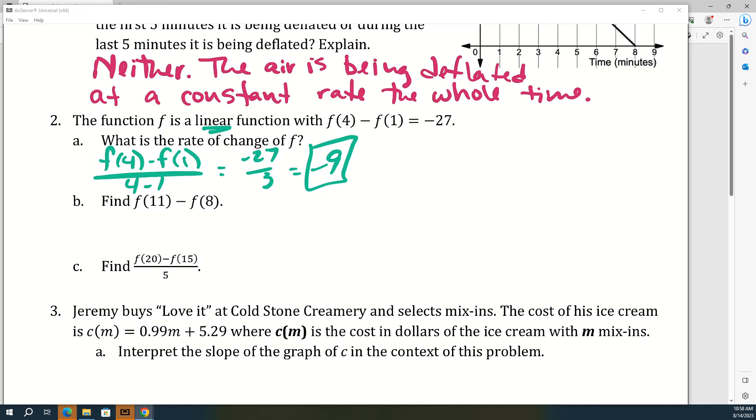Okay, so now for b, I want to find f(11) - f(8). Do we know that without knowing the function? What is it? What's the difference between 4 and 1? What's the difference between 11 and 8? Yeah, so if f(4) - f(1) is negative 27 and this is a linear function, this is also negative 27 because the difference between our x's is the same, so the difference between the outputs should be the same.